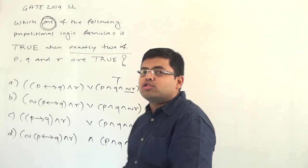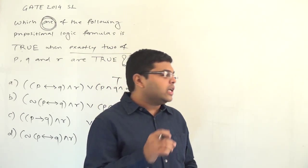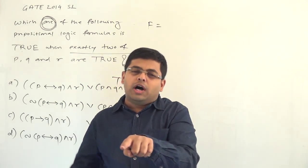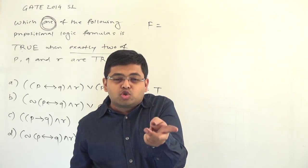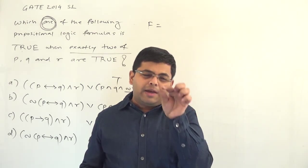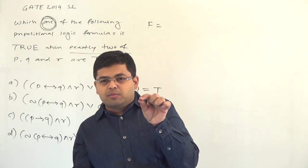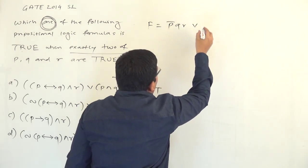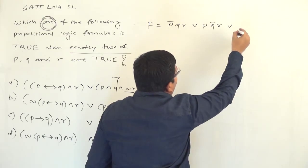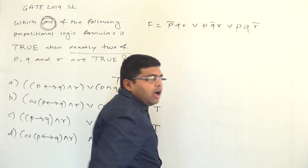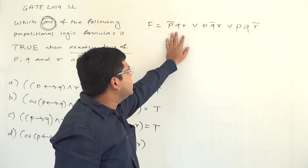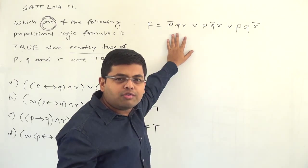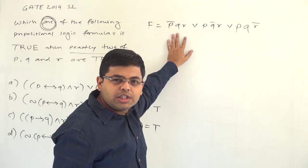If this question could be solved without substitution, that would be a great idea — and in fact it can be done. Let us try to represent what the question is saying. The question says: make any two variables true and the other one false, and the formula should evaluate to true. Which two variables are true and which one is false we don't know — any one variable I take and make false, the remaining two become true, evaluate the formula, and it should come out equal to true. That means the question wants: P̄QR OR PQ̄R OR PQR̄.